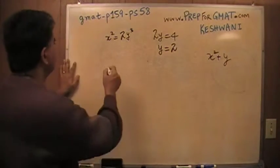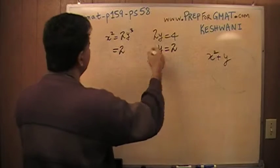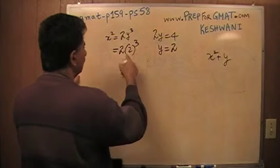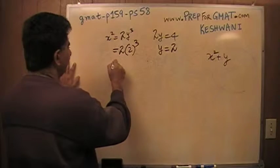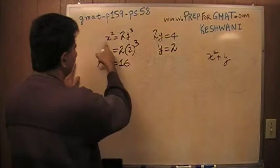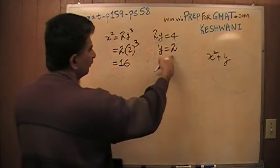Let's find it. x squared equals 2 times y cubed. y is 2, so it's 2 cubed. 2 cubed is 8 times 2 is 16. So x squared is 16, y is 2. We are done.